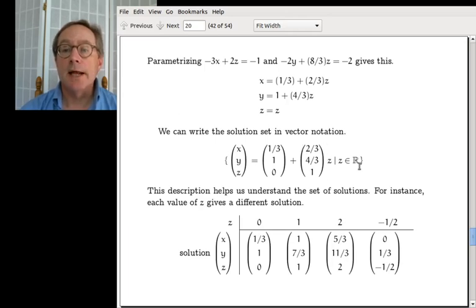That gives me this solution set. And I wrote it in vector notation here. The vector notation is very nice here because it organizes the constants, the one third, the one and the zero, all in one place. And the coefficients of z, the two thirds, the four thirds and the one, all in one place here. So this is an especially organized way to write down the information that is here. And it's awfully nice because right away we see, for example, what happens when you plug in different z's. If you plug in a zero or a one or a two or minus one half or z, you get the whole family of solutions, the whole family of x, y, z's written out there very plainly. So this is an organized way to write this.